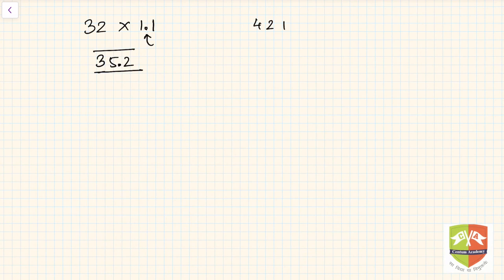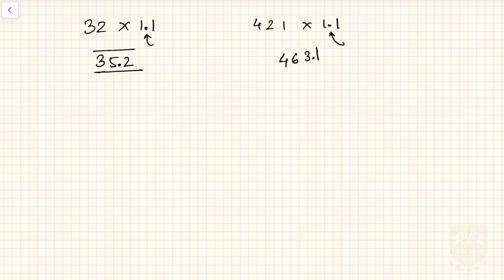For 421 into 1.1, ignore the decimal and multiply by 11 to get 4631. Since 1.1 has one decimal digit, the answer is 463.1.